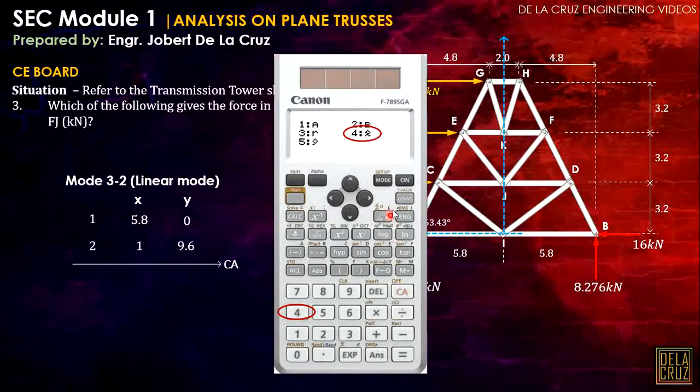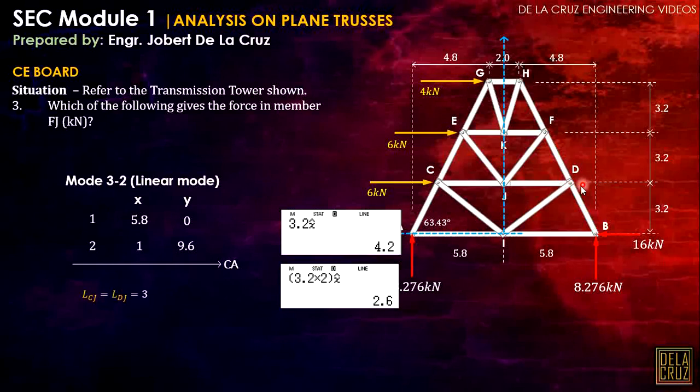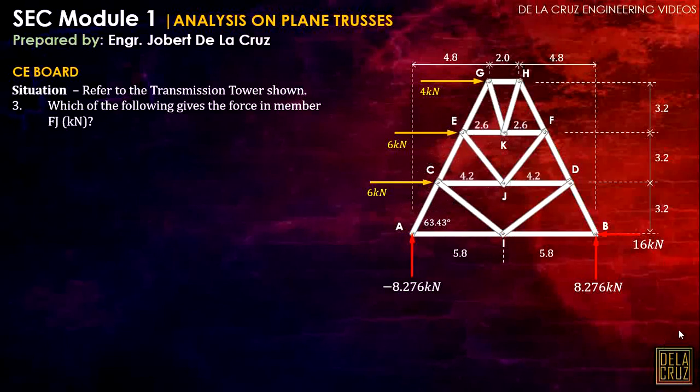After that, ito yung gagamitin natin, yung X hat. So if we want to calculate the member CJ, ganito yung lalabas. This is the member CJ. What is the value of X when Y is 3.2? And that is 4.2. Next, we need to calculate this. What is the value of X when Y is 6.4? And that is 2.6. So the length of CJ or the length of DJ that is 3.2 X hat or 4.2. And the same dito sa member EK and FK. That is 3.2. Of course, dalawa yan. So we have 2.6 meters.